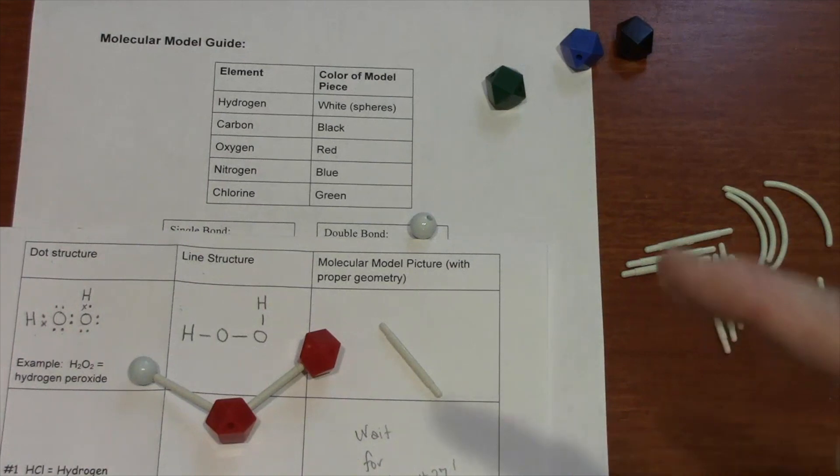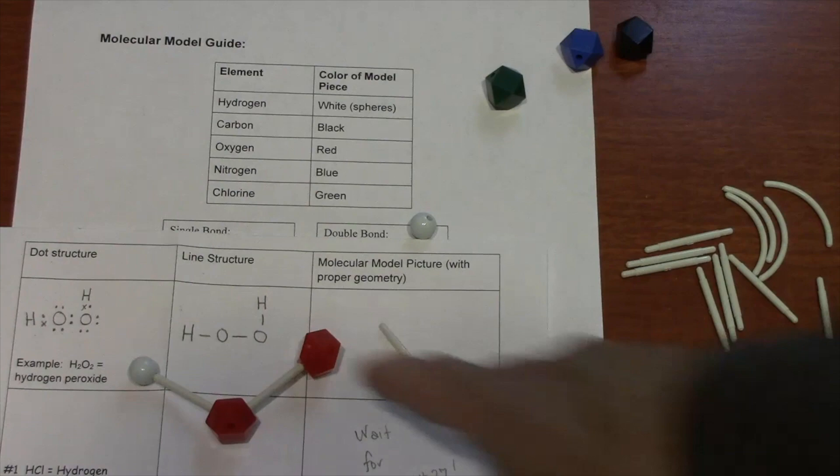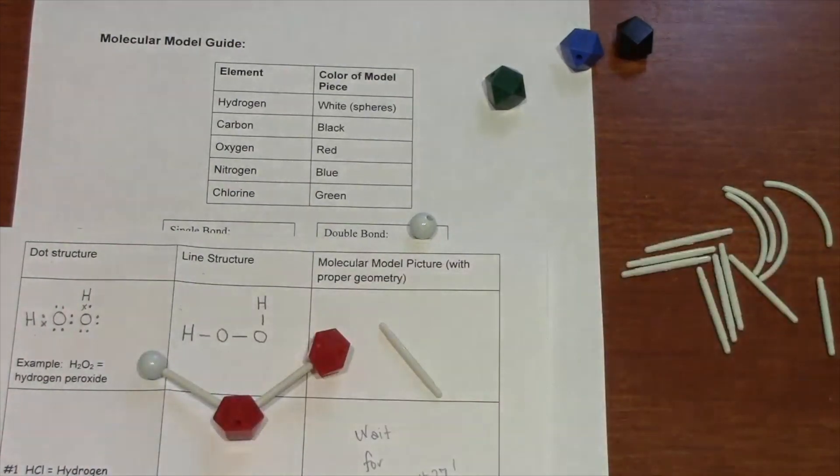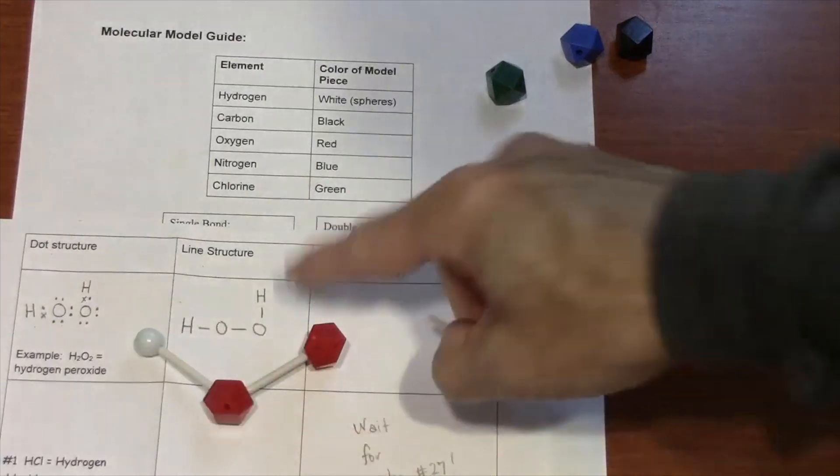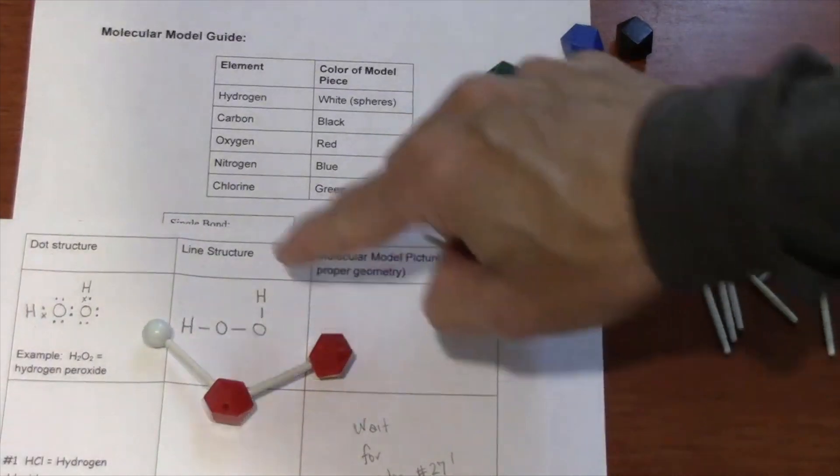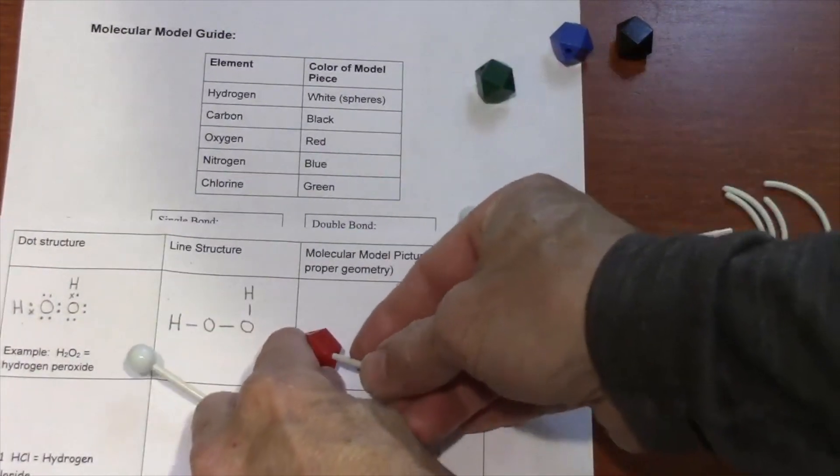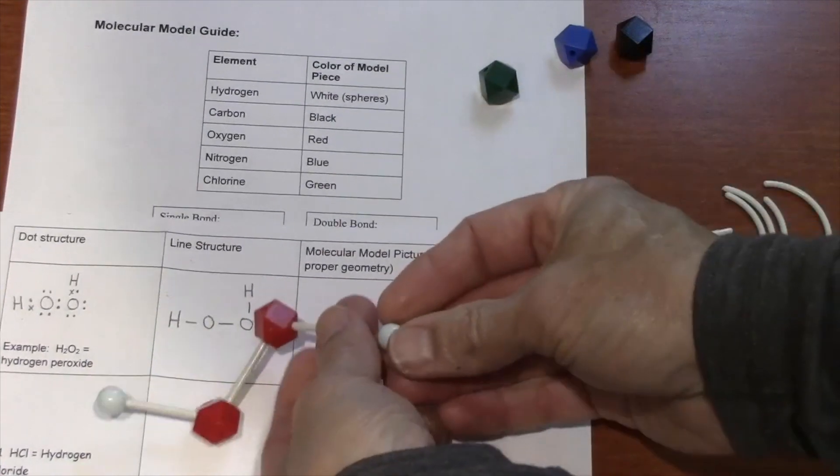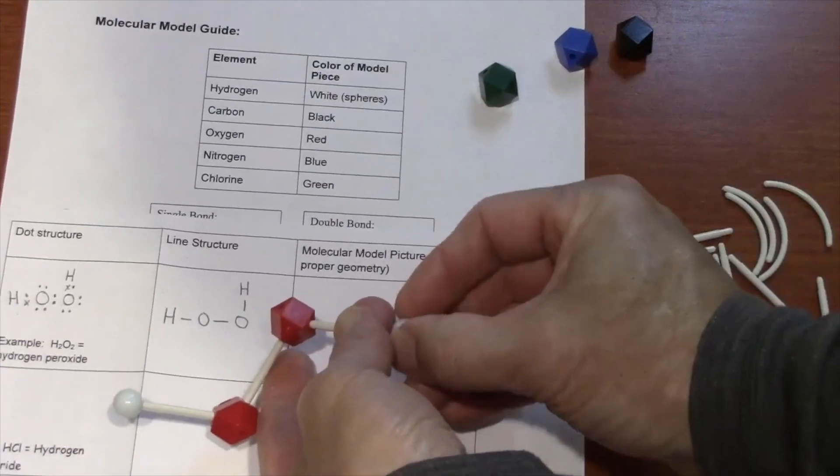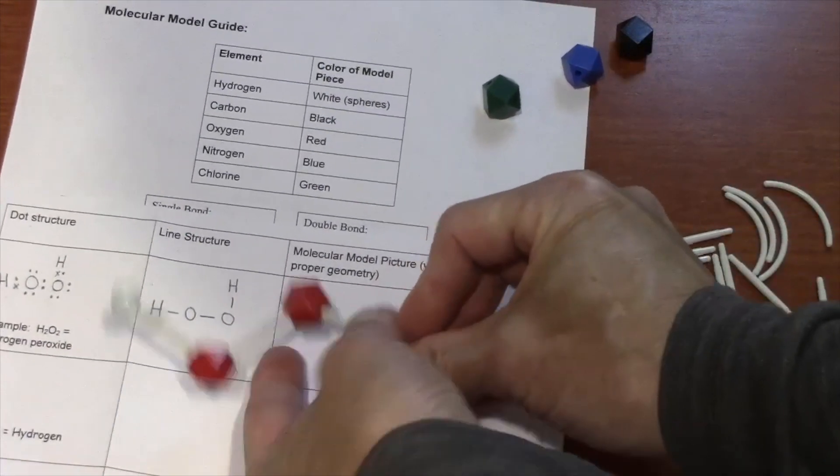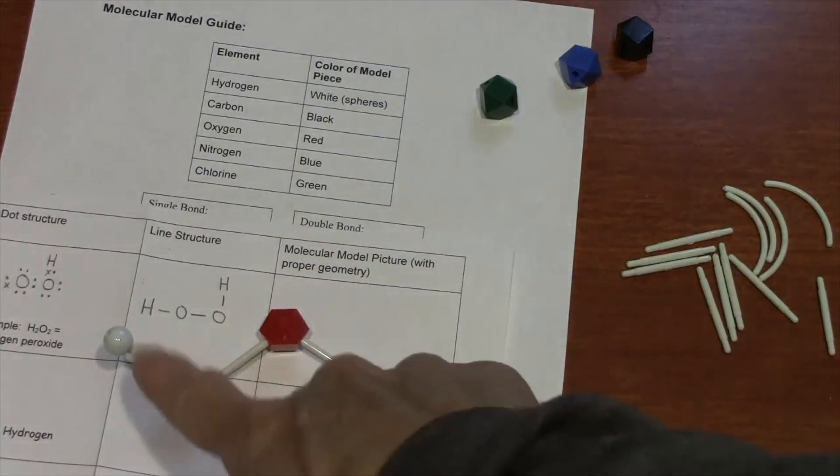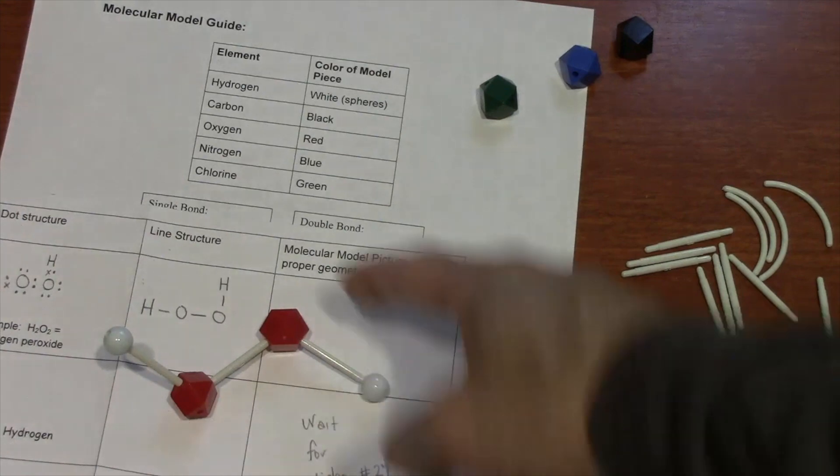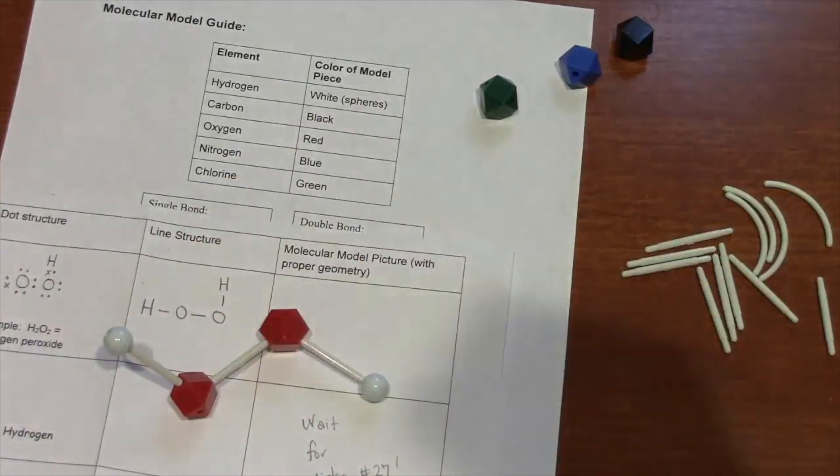You'll see very soon that I can't make the model look like the picture. The model is the truth, the real shape of the molecule. The flat picture on paper is not true. So trust your model. I need to make a bond now between this O and an H. There we go.